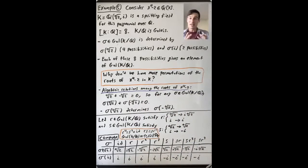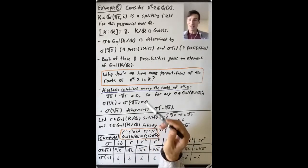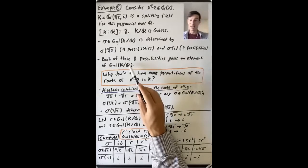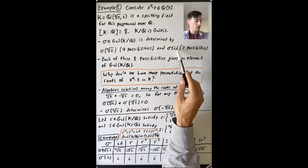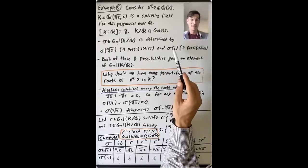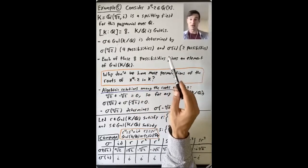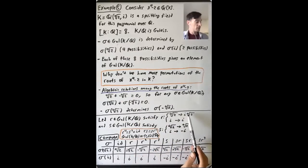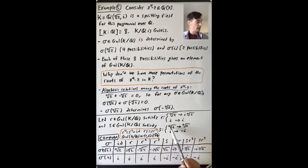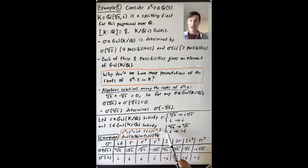Just like we did with the last example, we can dive in more deeply and get a description of these eight elements of the Galois group. We'll choose two special elements. Let R be the element of this Galois group that sends the fourth root of two to i times the fourth root of two, and sends i to i. And S will be the element that sends the fourth root of two to the fourth root of two, and i to negative i. Now we can compute with these two special elements R and S.